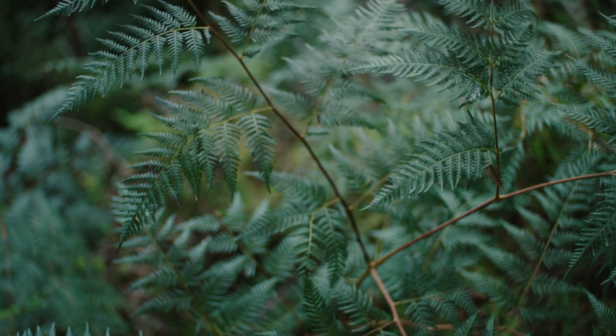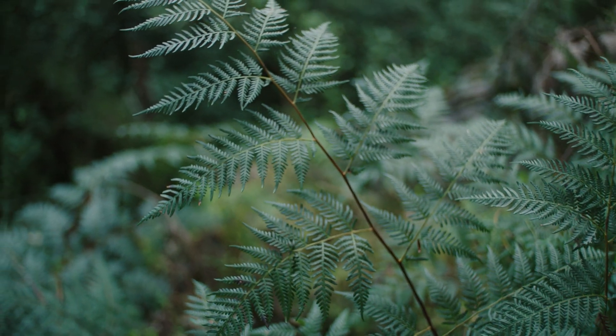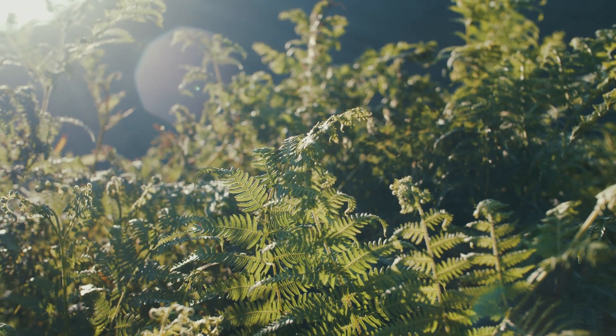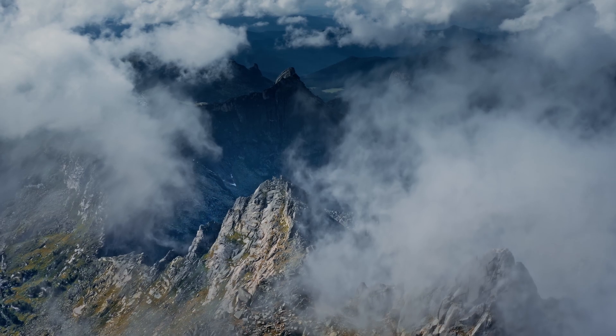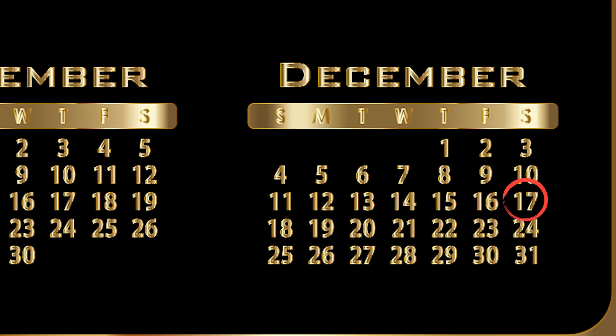December 1st on the cosmic calendar, around one billion years ago, the first multicellular animals of more complex variety emerged. These animals were simple, soft-bodied creatures, but they laid the foundation for the incredible diversity of animal life we see today. On December 14th, the first land plants appeared, playing a crucial role in further oxygenating the atmosphere and making Earth's environment more suitable for life on land. December 17th marked the Cambrian Explosion, a period of rapid diversification of life, when many of the major animal groups we know today first appeared in the fossil record.